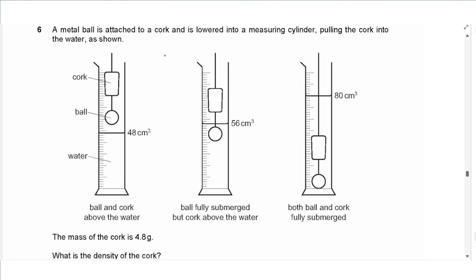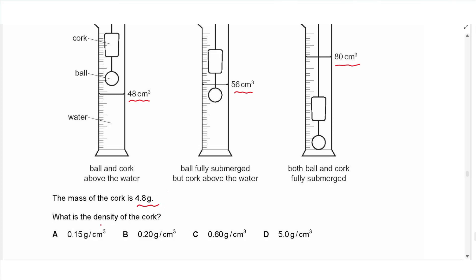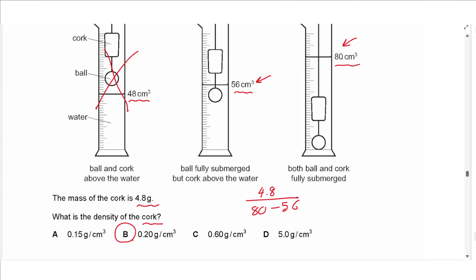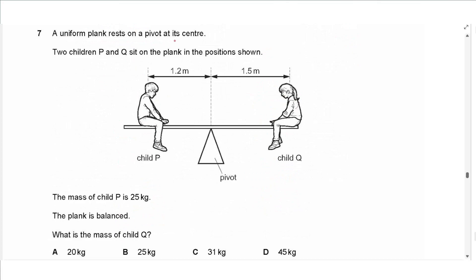Question 6 says: a metal ball is attached to a cork and lowered into a measuring cylinder. The first volume with water only is 48 cm³, with the ball alone is 56 cm³, and with the ball and cork is 80 cm³. The mass of the cork is 4.8 grams. To calculate the density of the cork, we use density = mass/volume: 4.8 divided by (80 − 56), giving 0.2 grams per cm³. The answer is B.